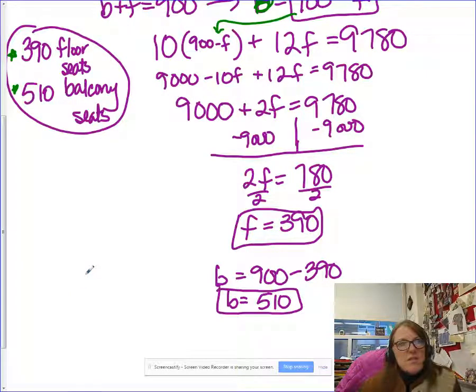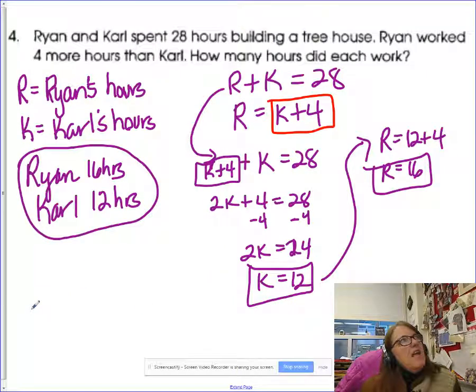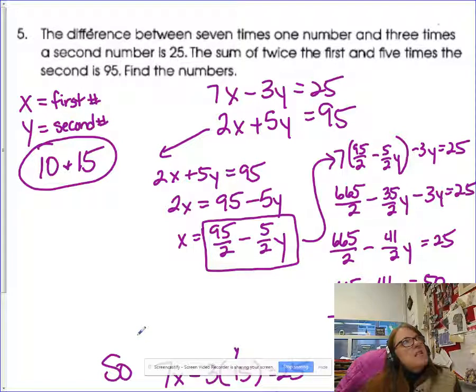By all means, feel free to pause it so you can find it. Ryan and Carl. This one, you might actually be able to simply guess and check or use some other strategies to end up with Ryan having 16 hours and Carl is 12. However, I also want you to be able to look at it and analyze it and interpret it algebraically. R plus K is 28 because that's the total hours. Ryan worked more than Carl, four more than Carl. Four more than Carl is the same as Ryan. There's your two equations. I substituted. There you go.